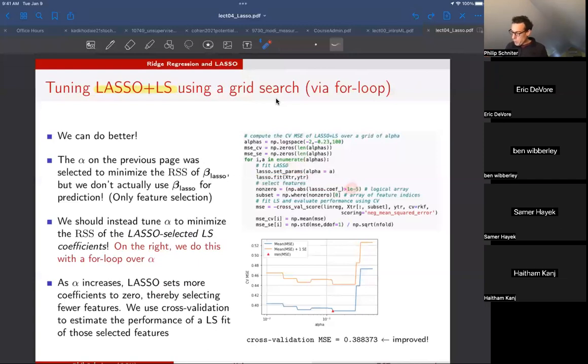Instead of using zero, I'm using 1E minus 5. I think both would work fine. We get a set of non-zero coefficients, which is a logical array. We're going to turn that into a subset of indices that we can then extract the features we want from our data. And you can see that I'm immediately doing cross-val score with my linear regression. That's going to give me mean squared errors for the different folds in my cross-validation, and I can take the mean of those to get my cross-validation MSE for that particular alpha.